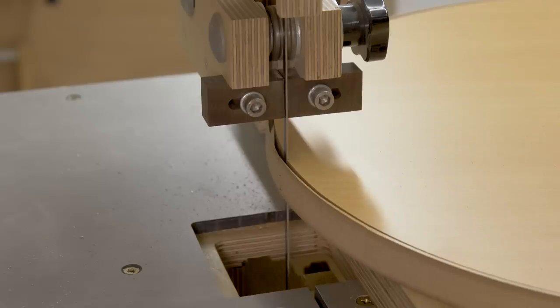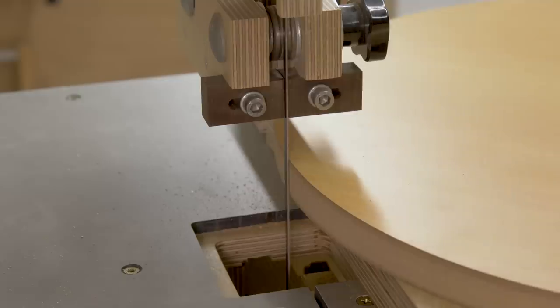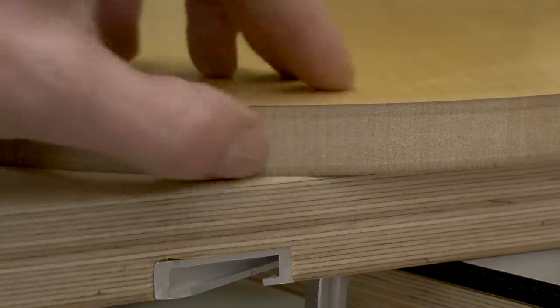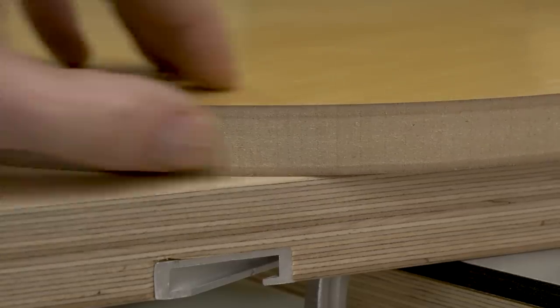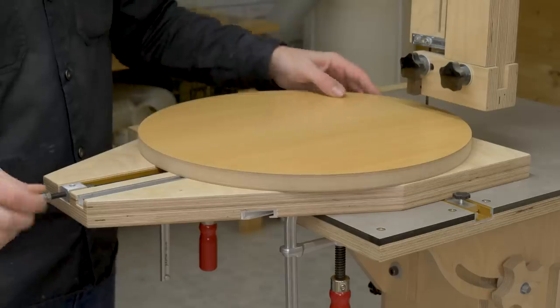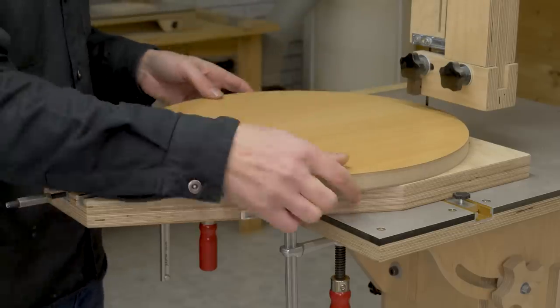I chose this MDF board with melamine on both sides because it's perfect to ensure the quality of the cut. As you can see, and as expected, the blade leaves some saw cuts on the edge of the piece, and that's using a fine-toothed blade.